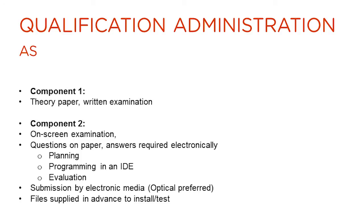At AS, the administration of the course has again been designed to be as simple as possible. Component 1 is assessed via a written examination paper. Component 2 is completed on screen and candidate files copied to individual candidate folders. The work is then copied to electronic media, again preferably optical, and sent to a designated examiner. This approach mitigates any problems that may occur with any complex system of loading work. Files will be supplied for the examination in advance of the exam so that they may be installed and tested on clean user accounts.